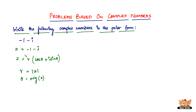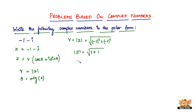Let's first find the modulus of the given complex number. r equals mod of z, which is equal to the square root of (minus 1) squared plus (minus 1) squared, because a equals minus 1 and b equals minus 1. So mod of z equals square root of 1 plus 1, which equals square root of 2.